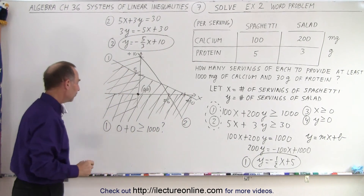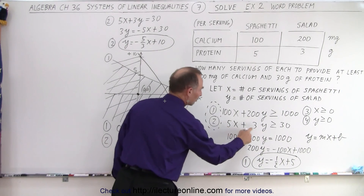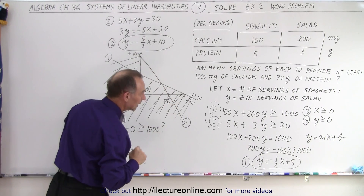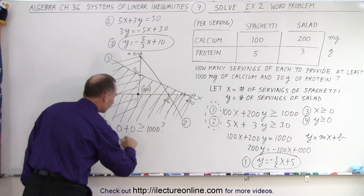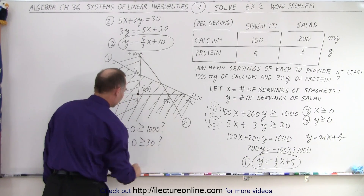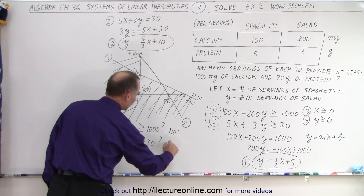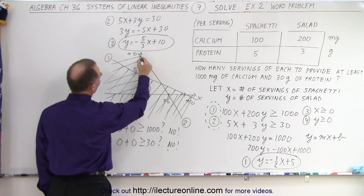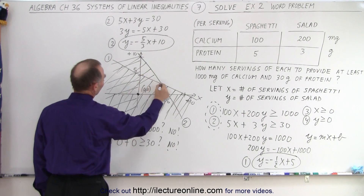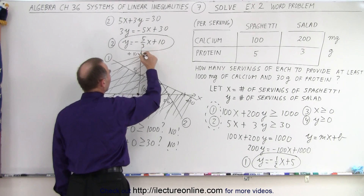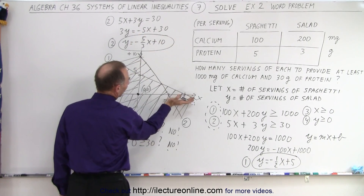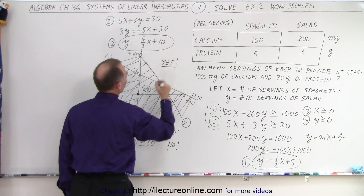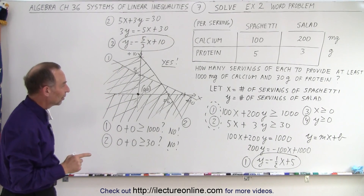For inequality number two, we again plug in zero for x and zero for y: is 5(0) plus 3(0) greater than or equal to 30? The answer is no again. So the origin does not satisfy inequality two either, meaning that region is also not valid. The only valid region is the one that falls to the right of the y-axis, above the x-axis, and bounded above-right by the two lines.